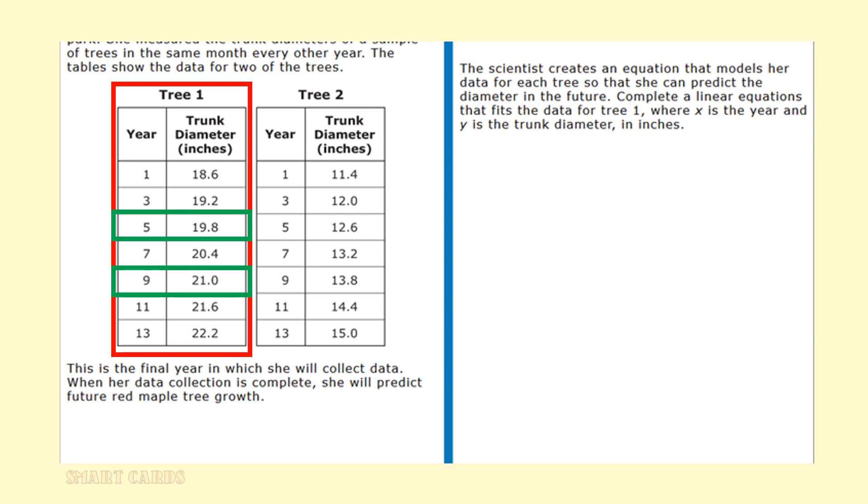The scientist creates an equation that models her data for each tree so that she can predict the diameter in the future. Complete a linear equation that fits the data for tree 1, where x is the year and y is the trunk diameter in inches. Here's the equation of a line formula that we're going to use to model this data. Here are the four signals in this problem. We need to know the slope. We need to randomly select two points. And the two points that we've randomly selected are year 5 with a 19.8 inch trunk diameter, and year 9 with a 21 inch trunk diameter. All of this information is coming from tree 1.